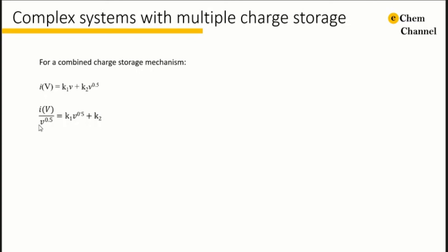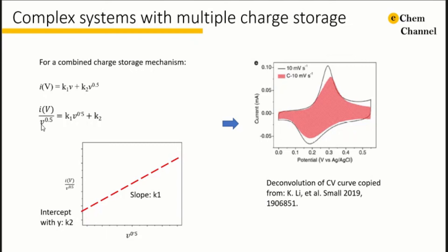Dividing v to the power 0.5 to both sides, we obtain this new equation. If we plot i(V) over v to the power of 0.5 as a function of v to the power 0.5, a linear curve can be obtained. In this linear curve, the slope is k1 and the intercept with y is k2. So the contribution from capacitive and diffusion limited charge storage mechanism can be obtained by knowing k1, k2 for a specific scan rate and specific potential.